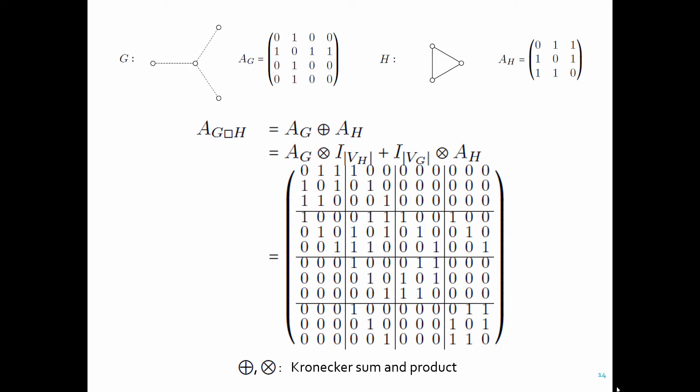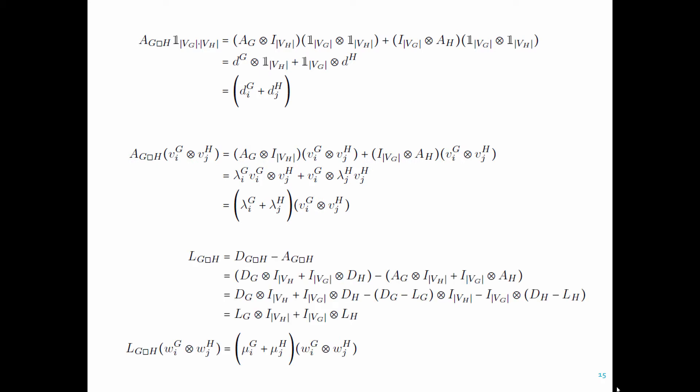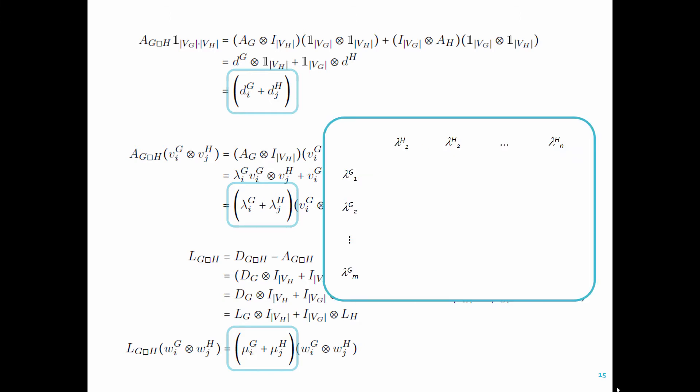This Cartesian product has some very nice mathematical properties in terms of its spectrum. The degree sequence, the adjacent spectrum, and the Laplacian spectrum of Cartesian product multi-layer network can be obtained exactly from the spectra of its two-factor networks. They are just the sums of individual degrees or eigenvalues of its factor networks collected for all their combinations.